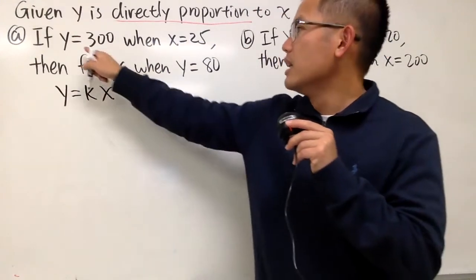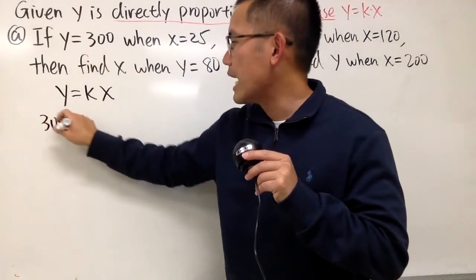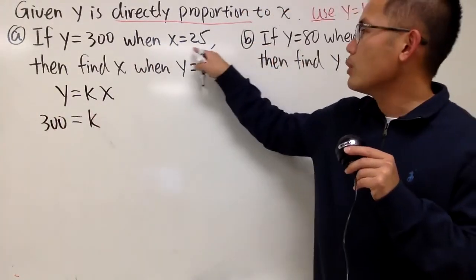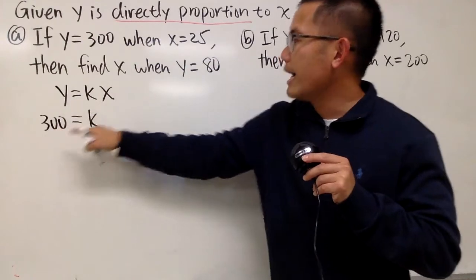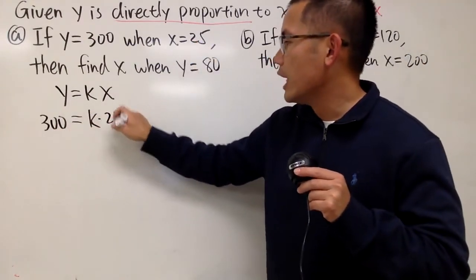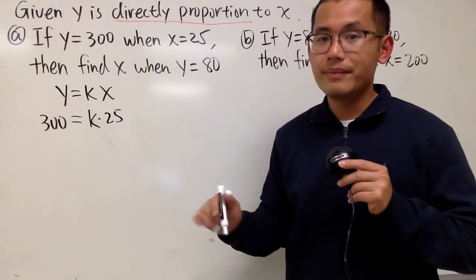Well, it says if y is equal to 300, so I can just put that down. k we don't know yet, but we know this is 300 for y when x is equal to 25. So we can just go ahead and multiply by 25 for x, like this. And then we can solve for k.